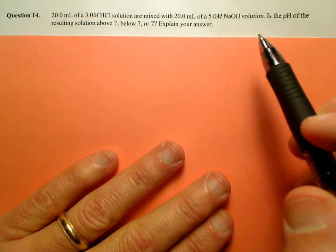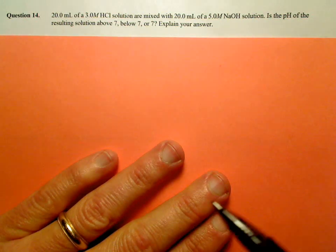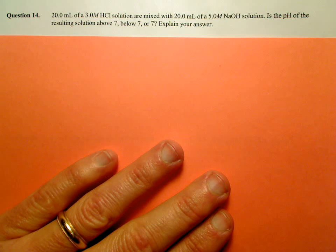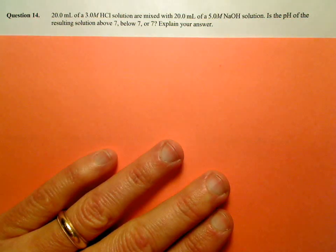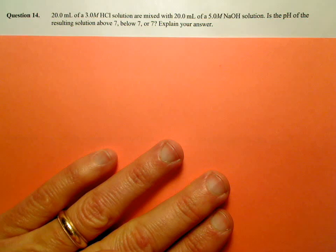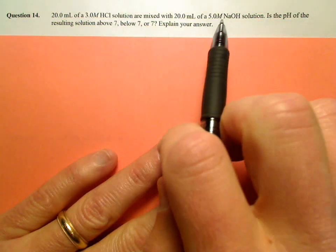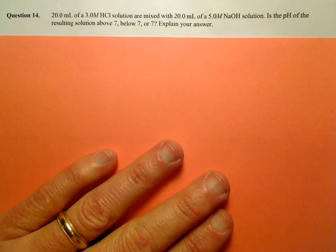All right, here's another problem we can solve without touching our calculator. So we have 20 milliliters of 3.0 molar HCl, and then we mix that with 20 milliliters, same volume, of 5 molar sodium hydroxide.